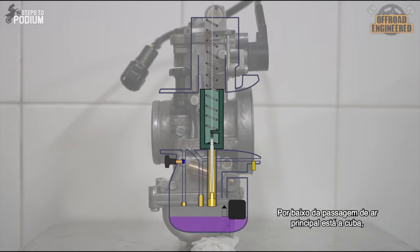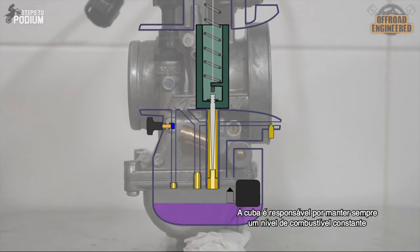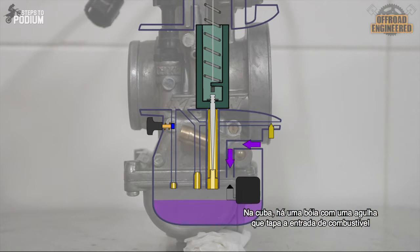Under the main air passage there's a float bowl, which is connected to the fuel tank. This float bowl is responsible for keeping available at all times a steady level of fuel under the throat in order to prevent irregular throttle response. The float is a simple buoy with a needle that blocks the fuel tank's feeding port when there's enough fuel in the float bowl.